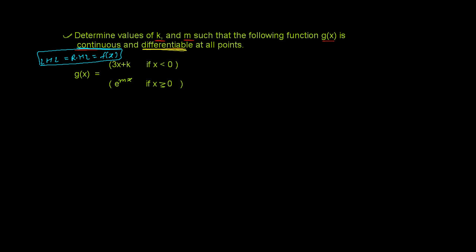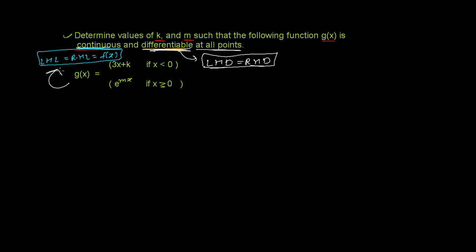The next condition is differentiability. If any function is differentiable at a point, then the left-hand derivative and the right-hand derivative at that point must both be equal. So if left-hand derivative equals right-hand derivative, the function is differentiable. The question says g(x) is continuous and differentiable at all points.